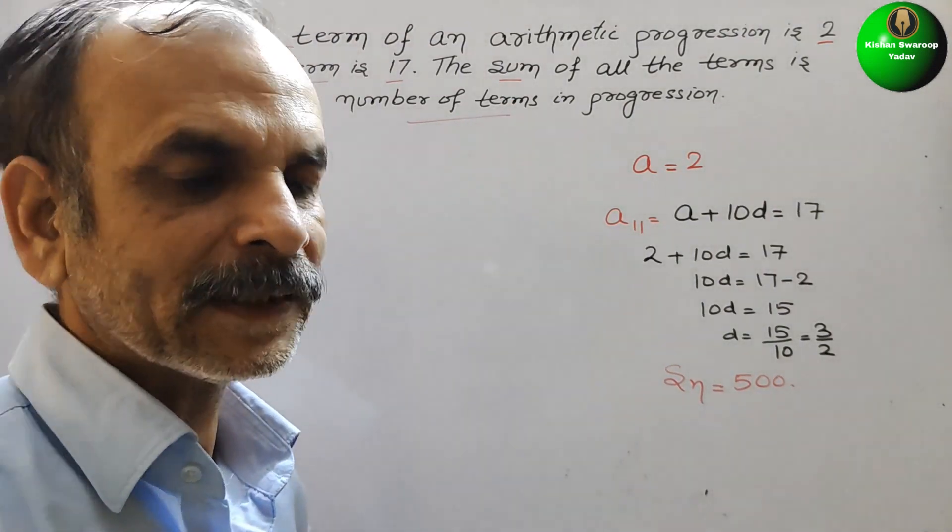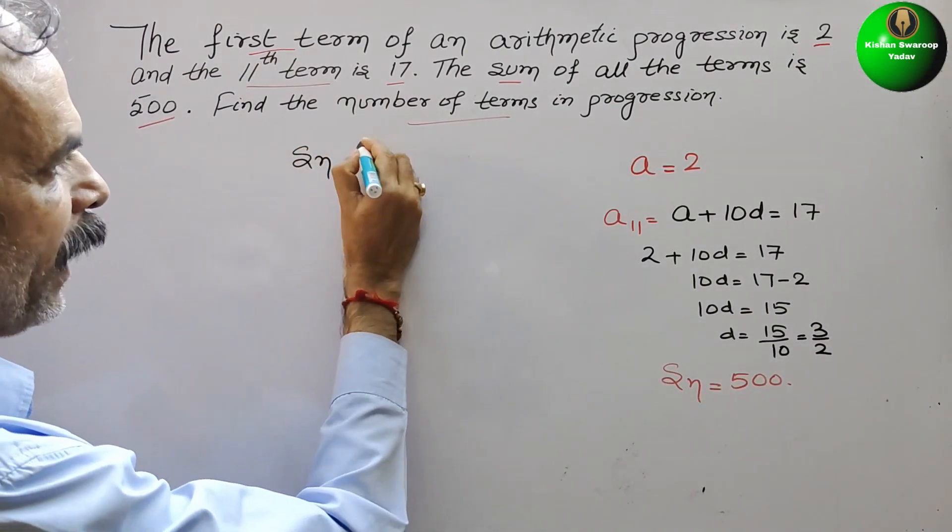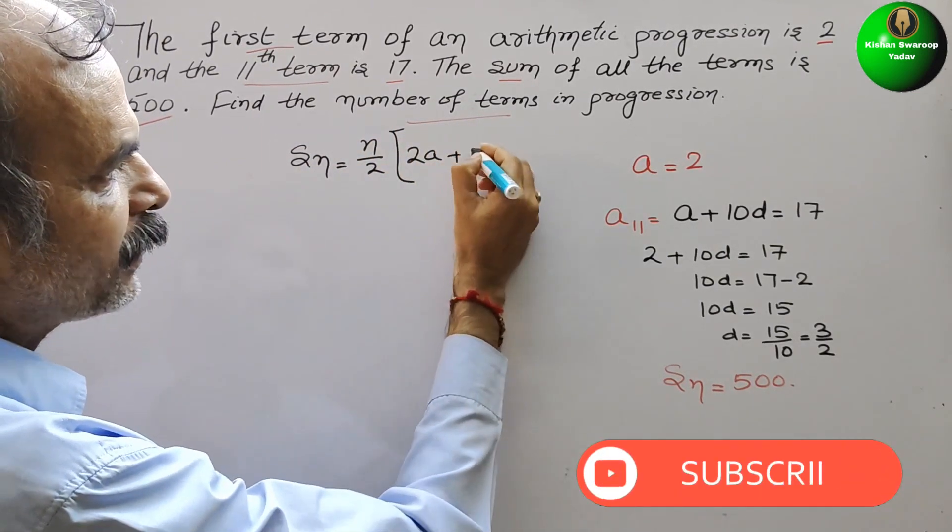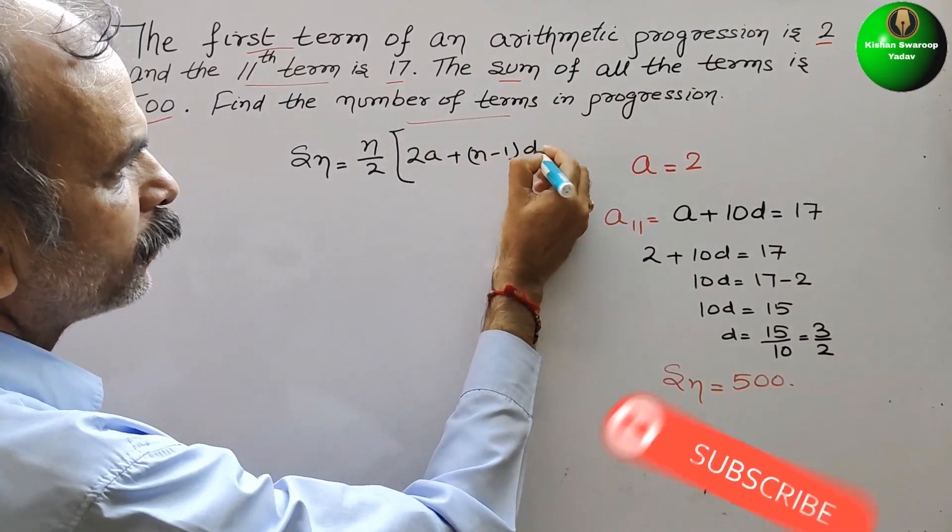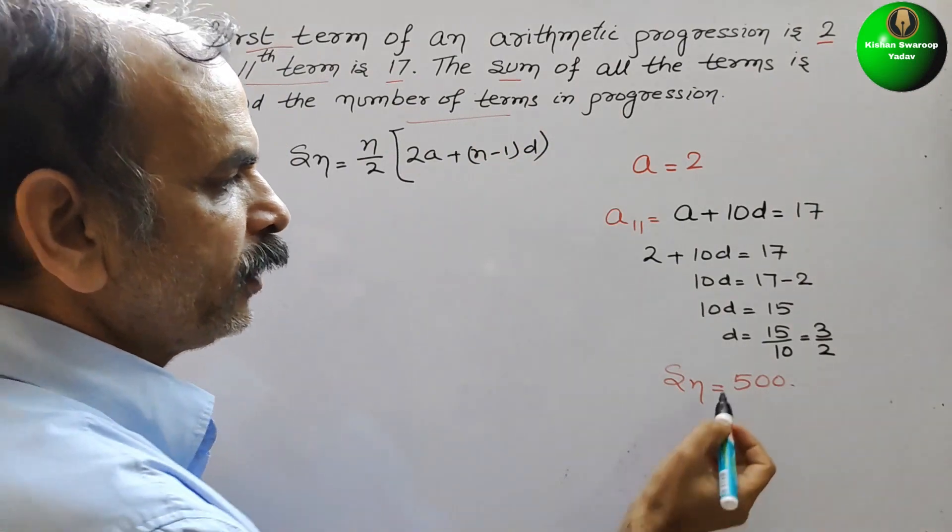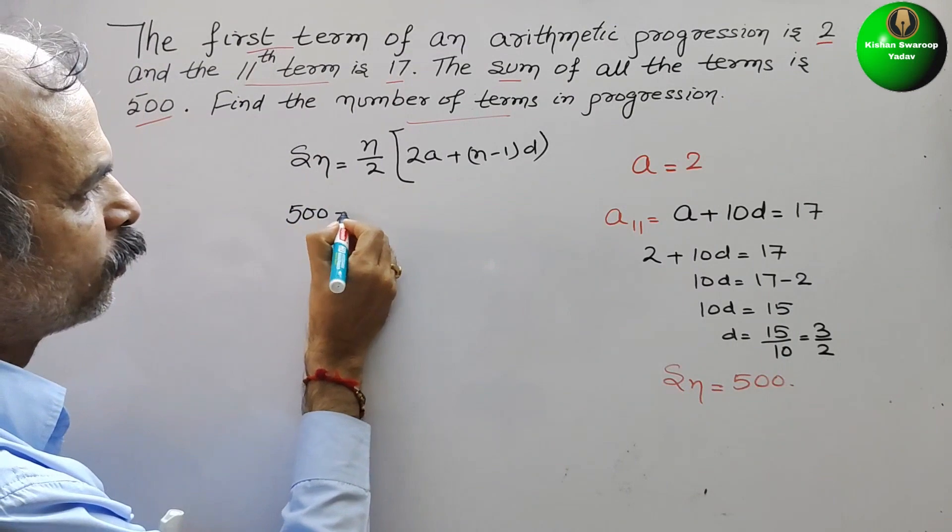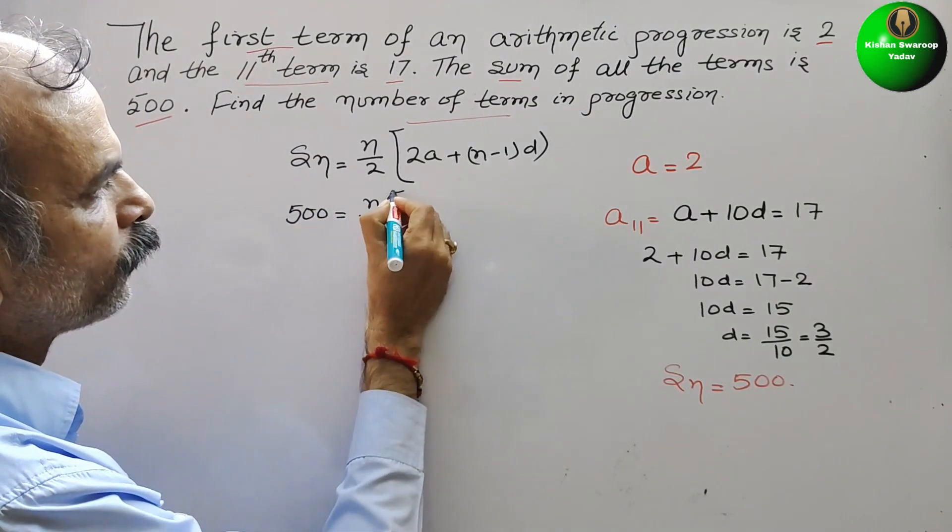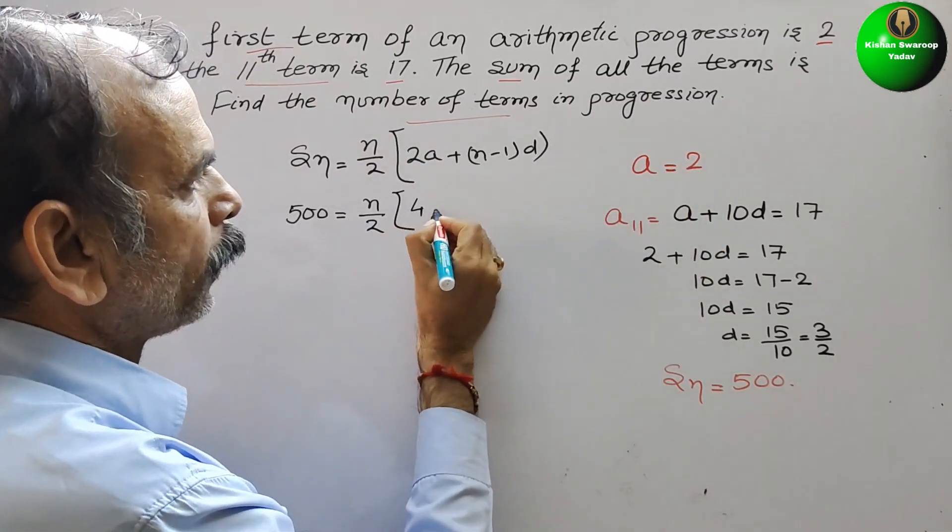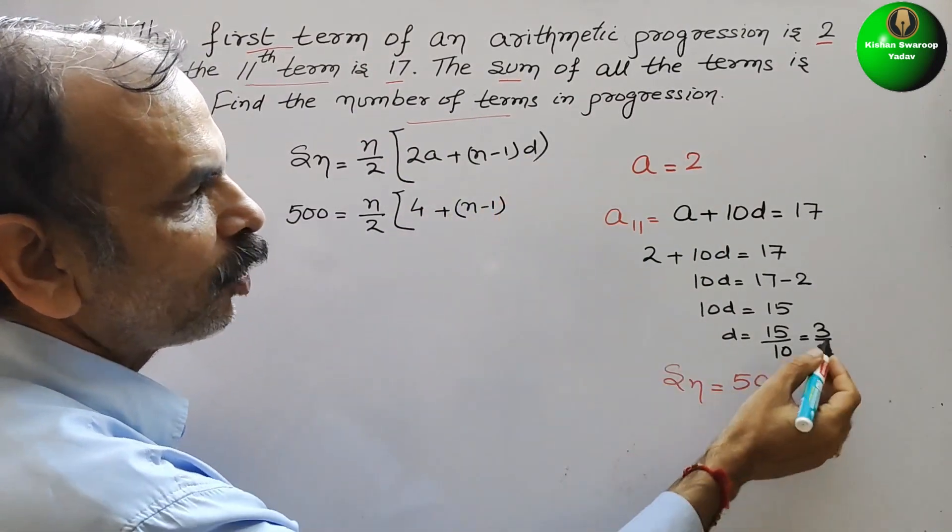Sₙ formula is what? Sₙ is equal to n by 2, and here comes 2a plus (n minus 1) into d. n minus 1 and d is your 3 by 2. Now, substitute the value, what we are knowing that. So here 500, so here we will put 500 is equal to n by 2, 2a, so 2 into 2 is 4, plus (n minus 1) and d is your 3 by 2.